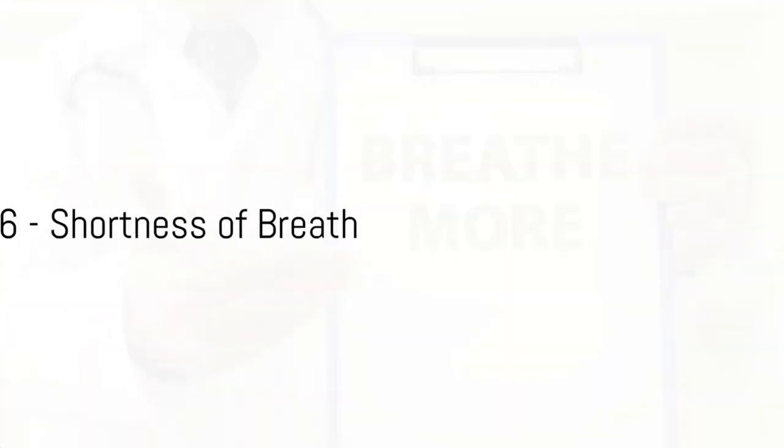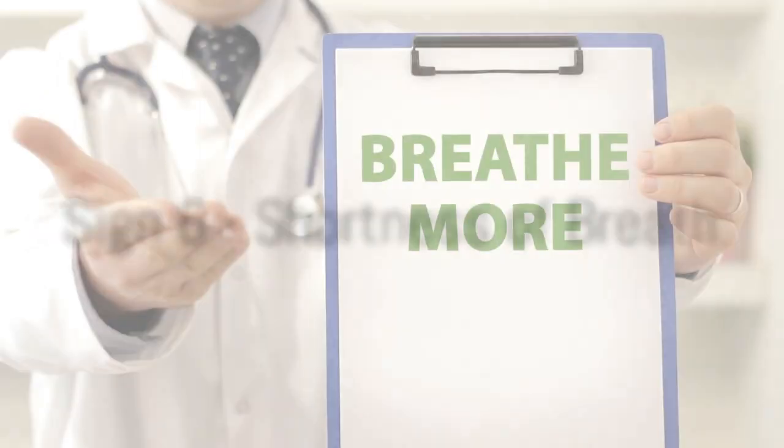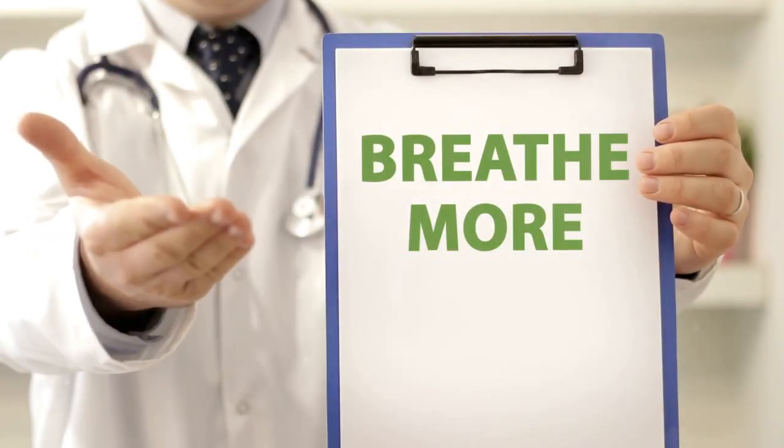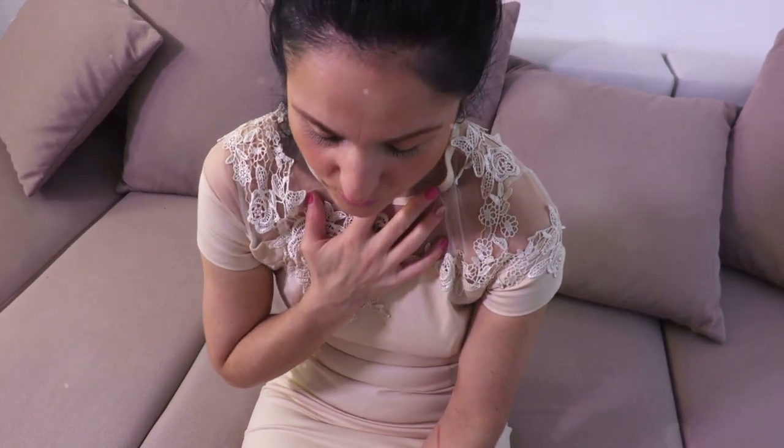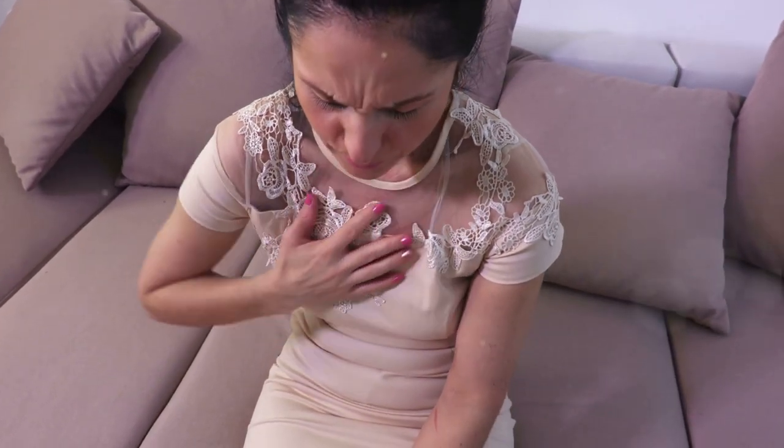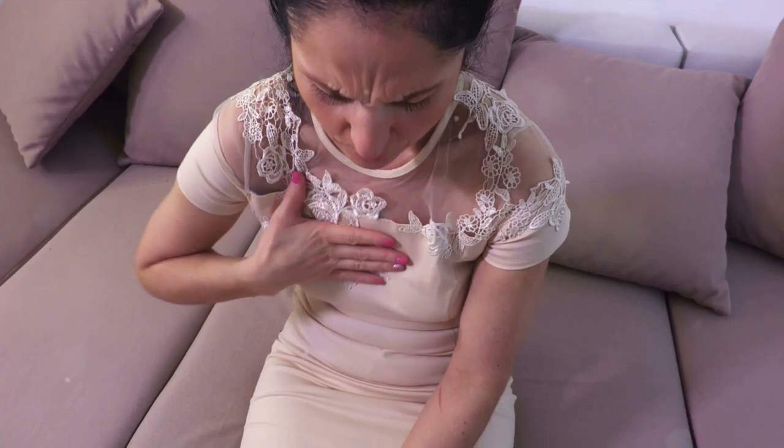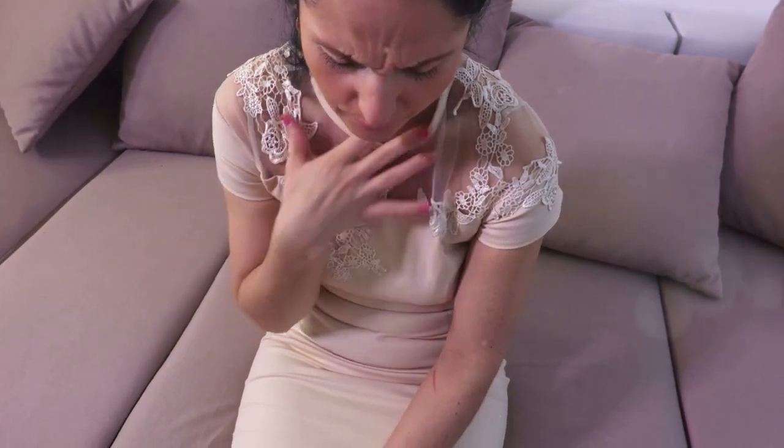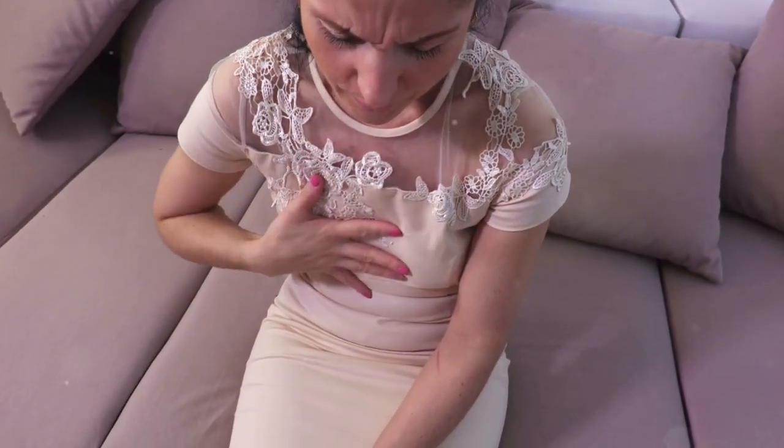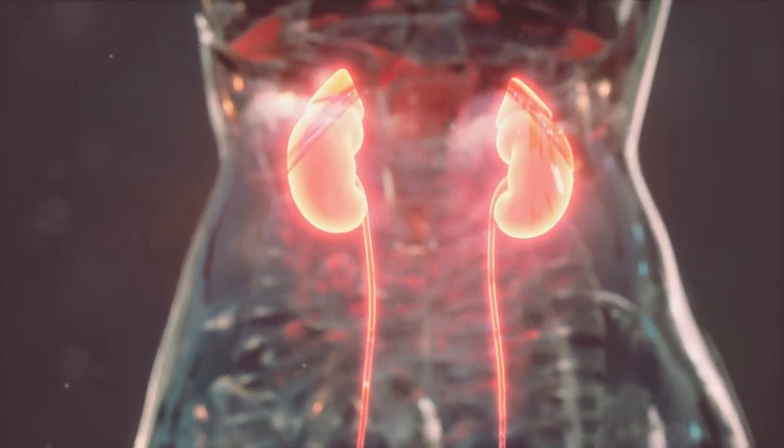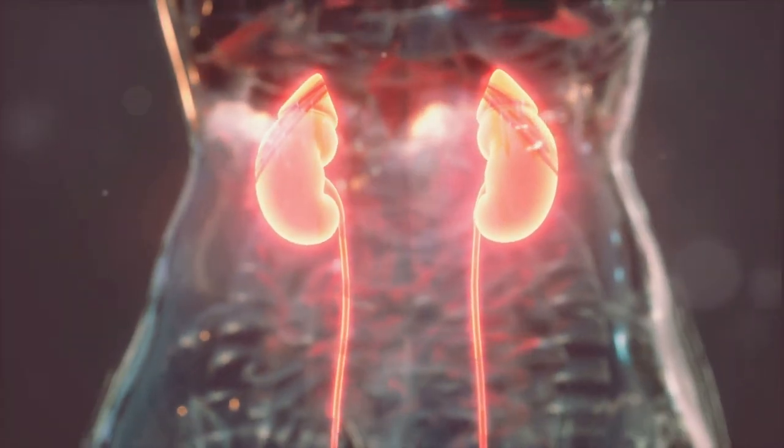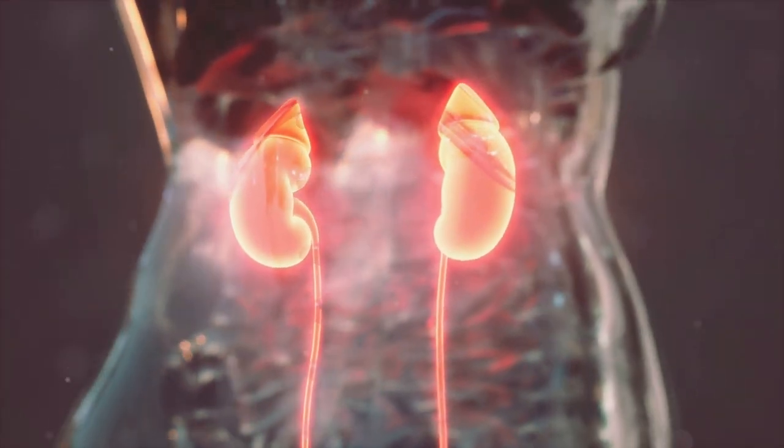The sixth sign, shortness of breath. Now you might be wondering what on earth does kidney disease have to do with breathing? The answer lies in the kidneys role in maintaining the balance of fluids in our bodies. When the kidneys aren't functioning optimally, excess fluid can build up in the body, and this can sometimes accumulate in the lungs. This fluid buildup can make it difficult for you to breathe normally, leading to a feeling of breathlessness or shortness of breath.